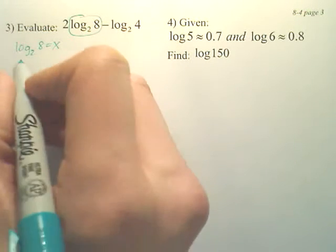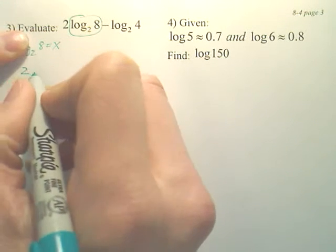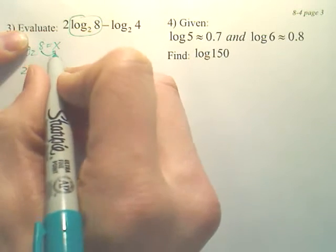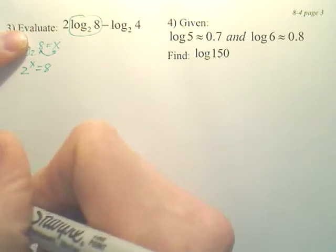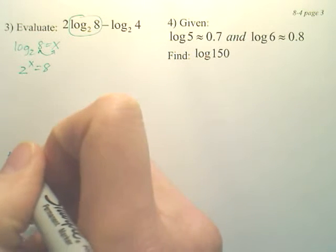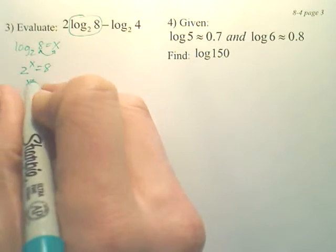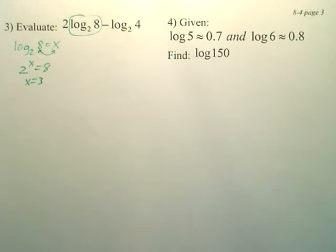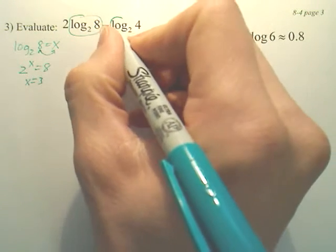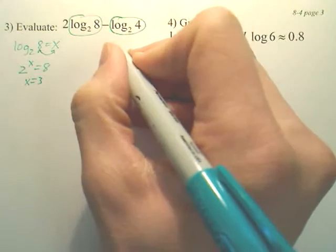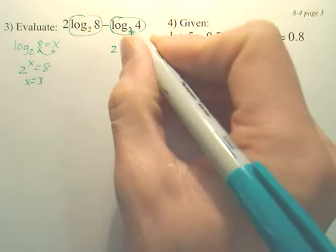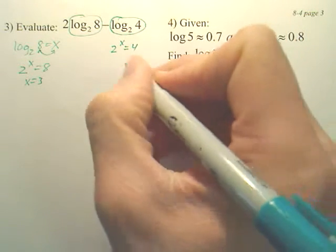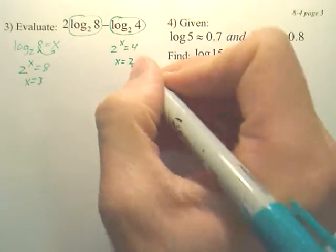To find that, I drop the log and switch the x and the 8. So it's saying 2 to the what power is 8. That is 3. This one over here is saying 2 to the what power is 4. What's that equal? That's 2.